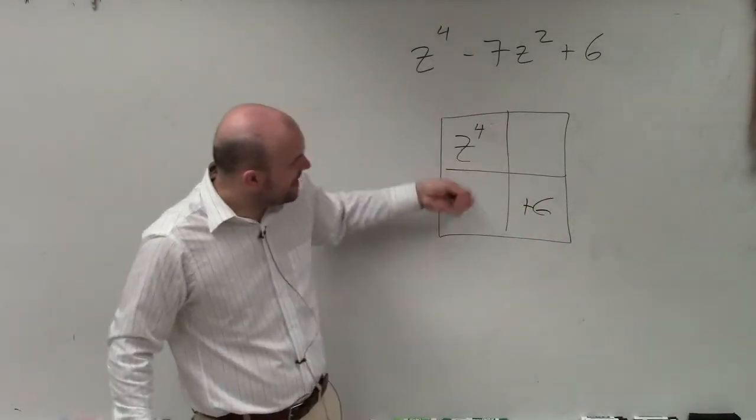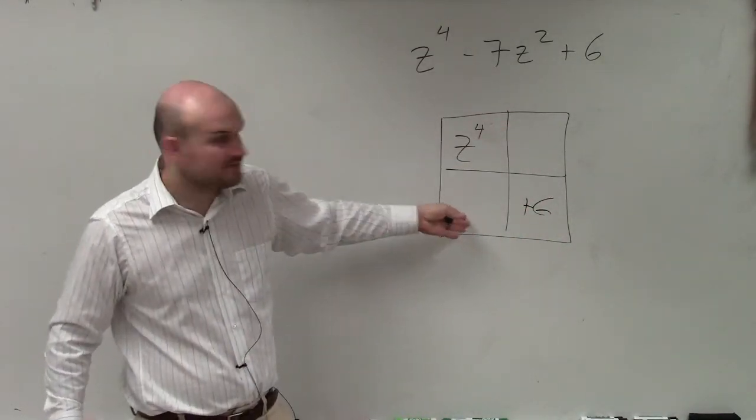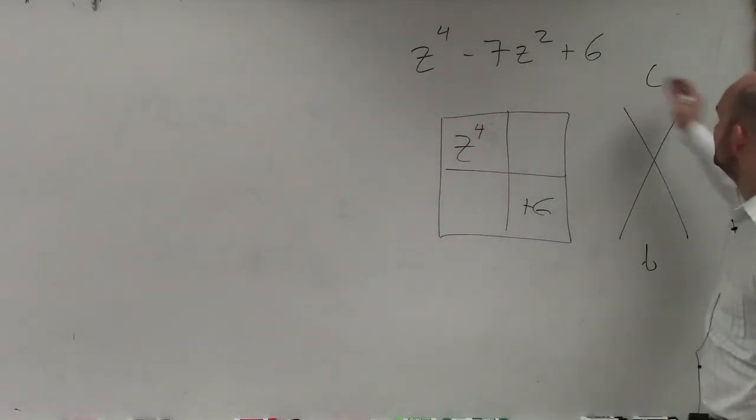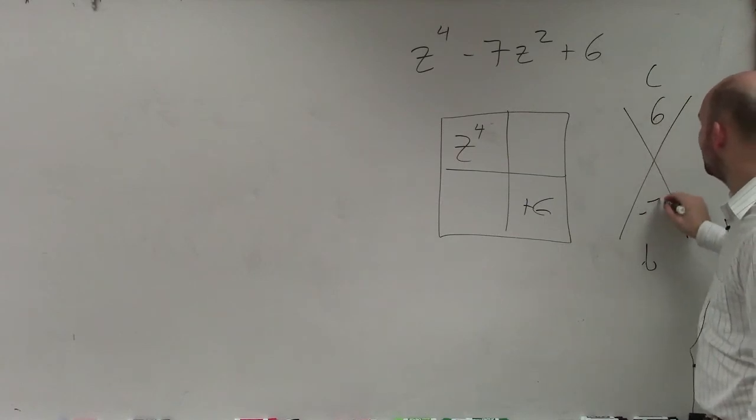I need to identify what are going to be my other terms here. Well, if you use your c and b, you'd see that c is six and b is negative seven.